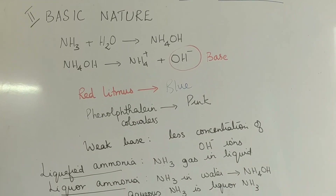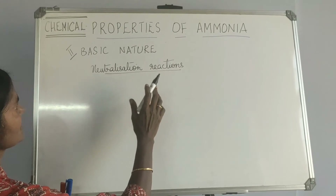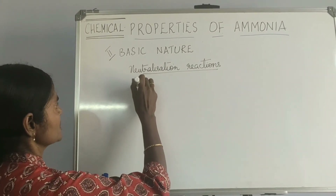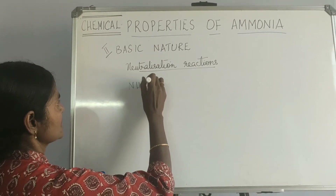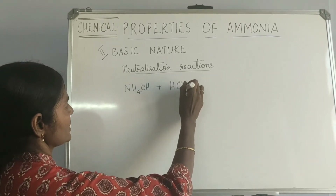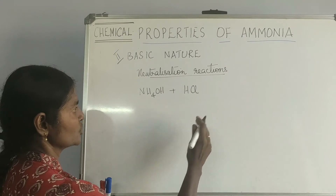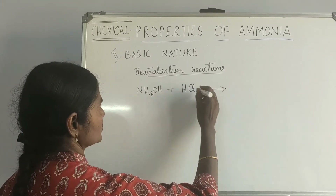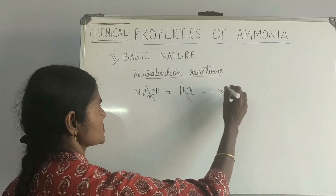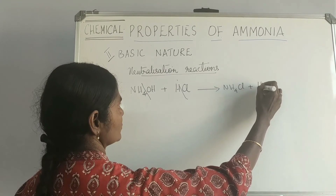This is about the basic nature. Neutralization reactions are the next thing that comes from basic nature, where ammonium hydroxide being a weak base is capable of reacting with acids like hydrochloric acid, sulfuric acid, and nitric acid to give salt and water. So: NH₄OH + HCl gives ammonium chloride plus water.